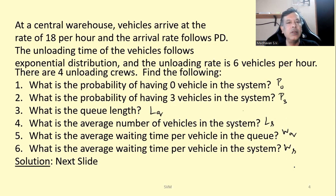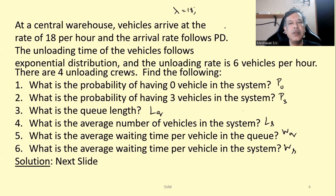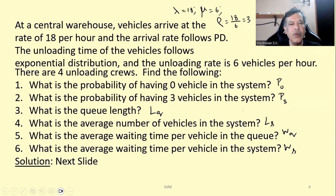We will understand one numerical example. At a central warehouse, vehicles arrive at the rate of 18 per hour, which means the arrival rate lambda is 18, and it follows a Poisson distribution. The unloading time of the vehicle follows an exponential distribution, which means the service rate follows a Poisson distribution. The unloading rate, that is the service rate mu, is given as 6 vehicles per hour. So our rho will be lambda divided by mu, which gives 18 divided by 6, equal to 3. There are 4 unloading crews, which means our C value is 4.